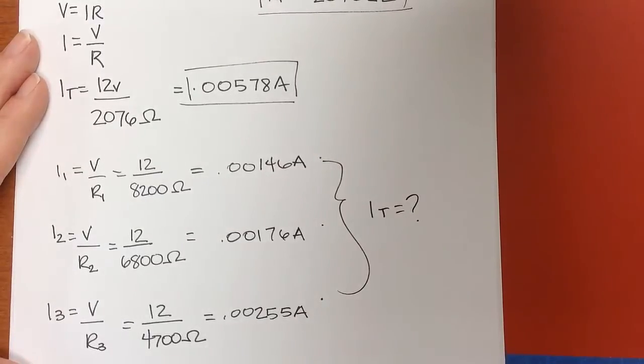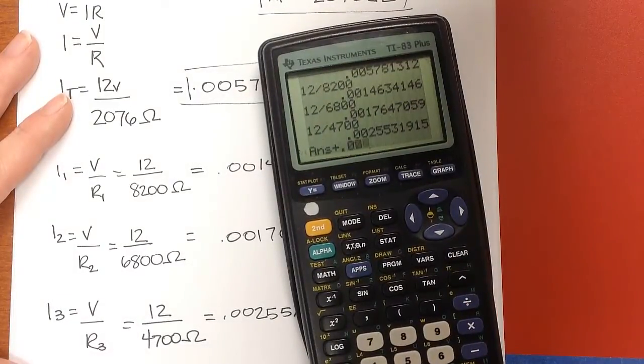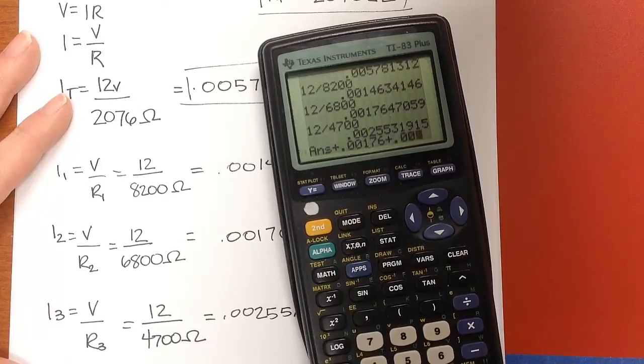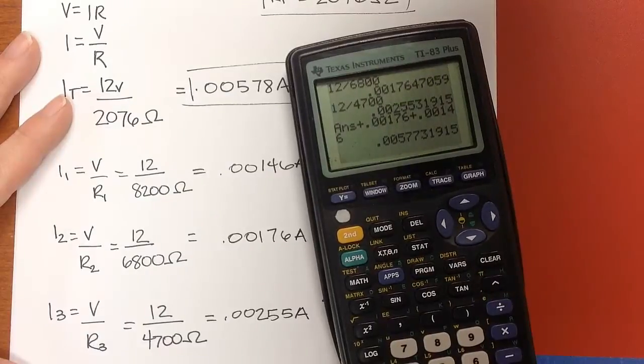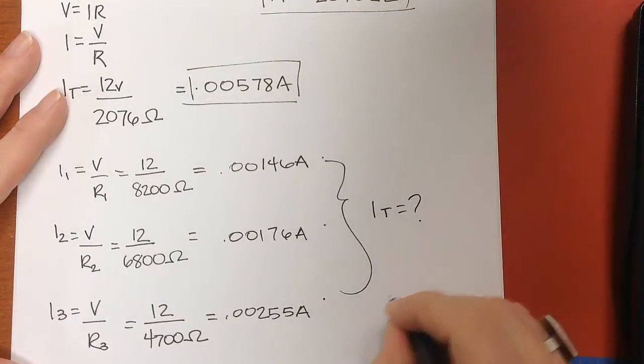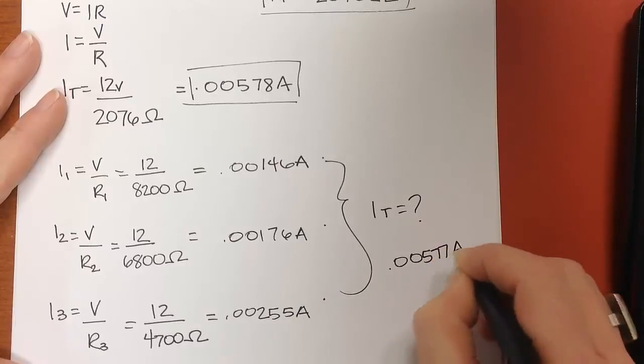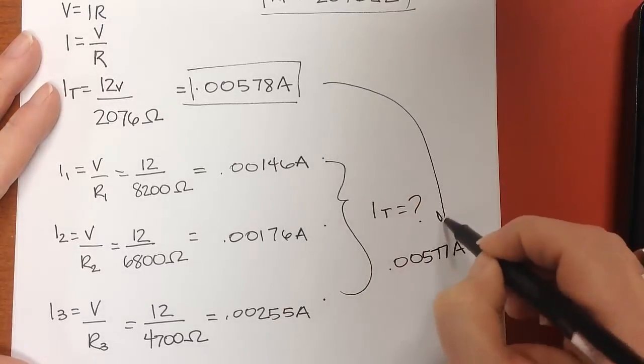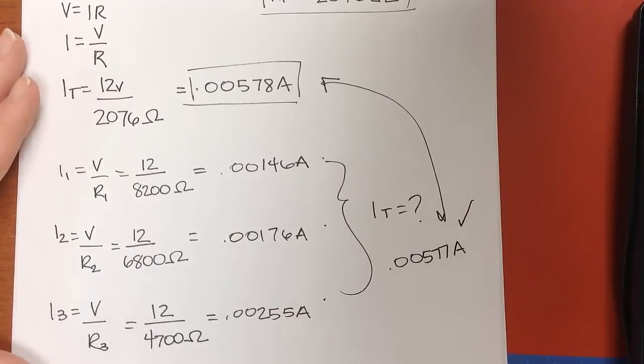So let's plug those back in. And I got 0.00577. So when I added them all up, I got 0.00577 amps. That's awfully close to the total amps I got, so I feel pretty good that that's right.